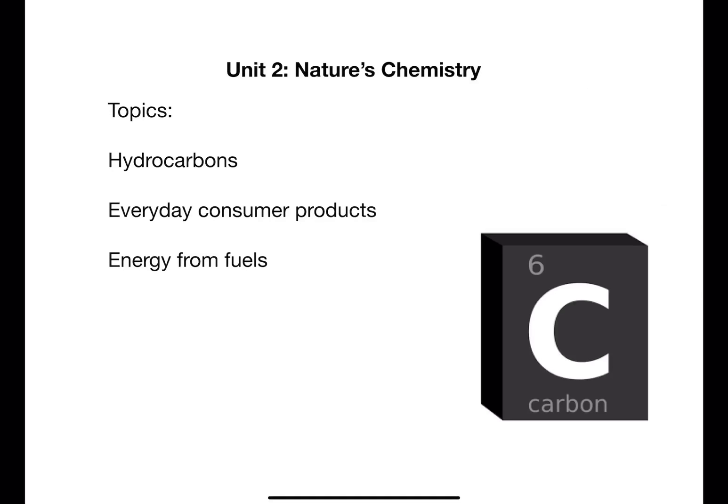Unit 2 is called Nature's Chemistry and this focuses on the chemistry of carbon. The hydrocarbon topic introduces you to different families of compounds and their properties. The systematic naming rules are covered in this unit. Everyday Consumer Products focuses on two other carbon containing families, alcohols and carboxylic acids, looking at their structures, properties and uses. You will learn to carry out experiments and calculations that allow the calculation of energy released when fuels are burned.